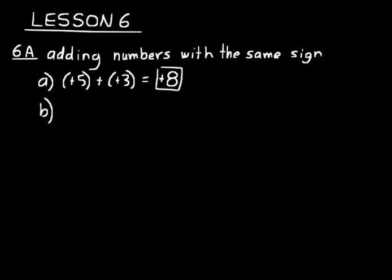This rule comes in handy with negative numbers. If we had negative five plus a negative two, we just think of that rule: look at the absolute values. Five plus two is seven, and we give the answer the sign that both of those numbers had — so that would be negative seven. When adding numbers with the same sign, add their absolute values and give the answer their original sign.